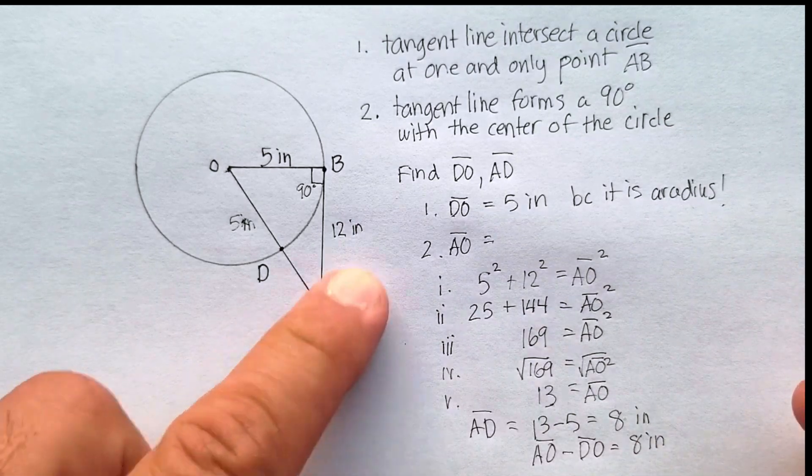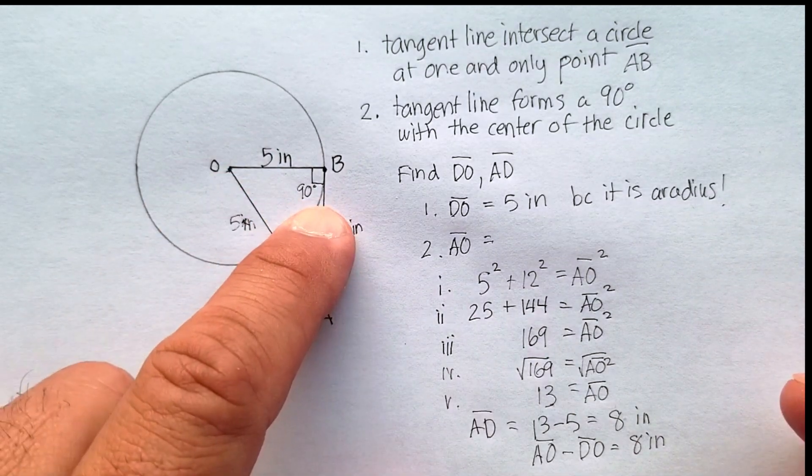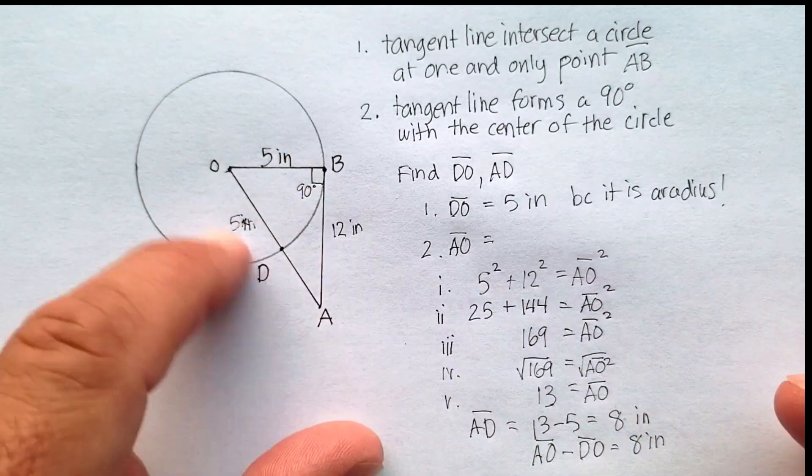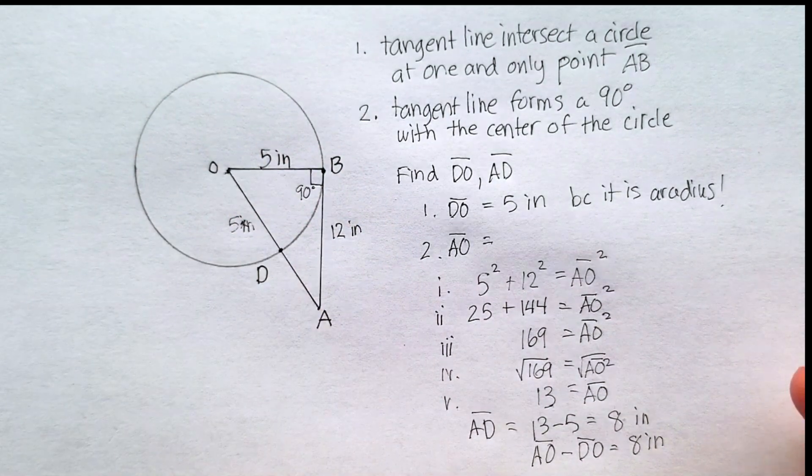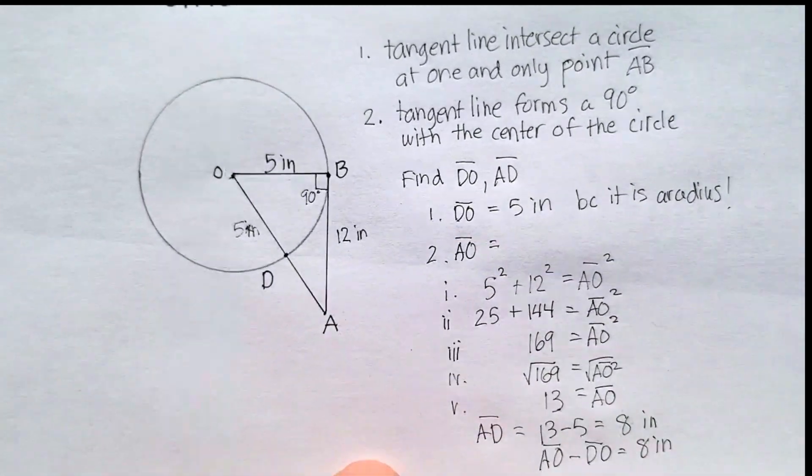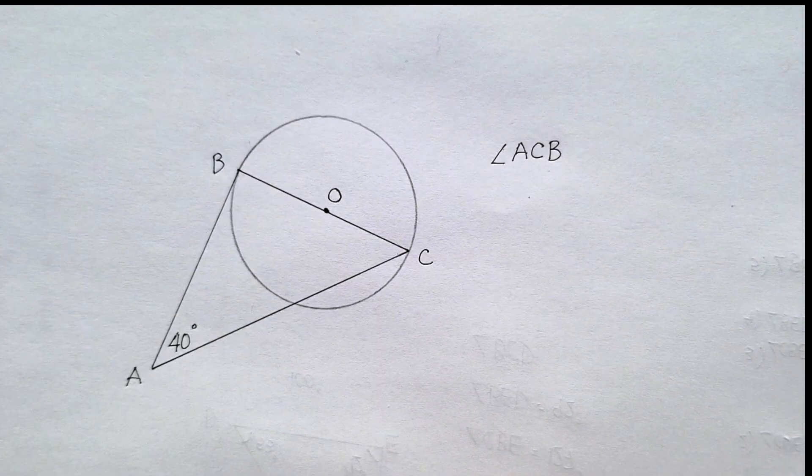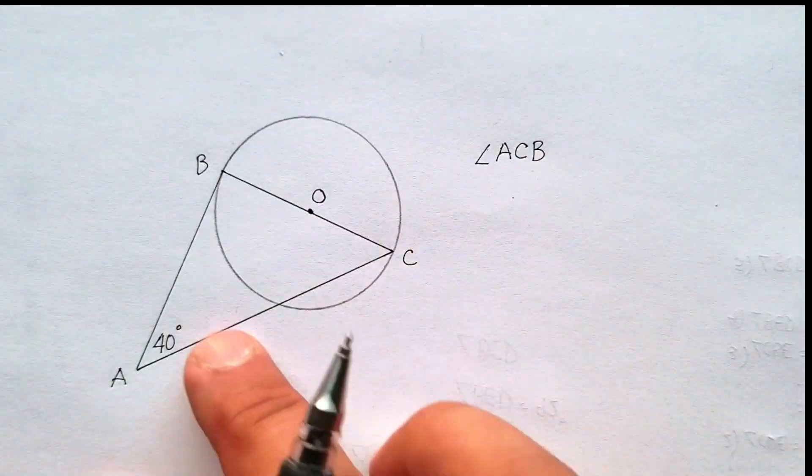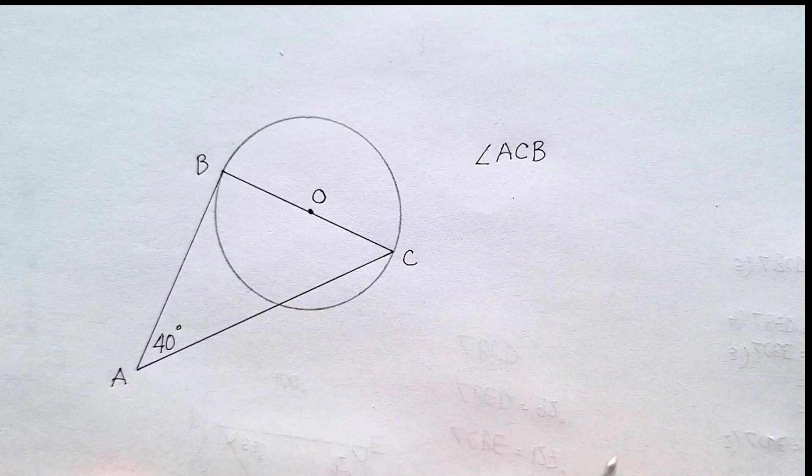Okay? So notice how we were able to use the tangent line and the information there to find the right triangle, and then use the Pythagorean theorem. Okay? Let me show you another example of what we could do here. So here's another example of what we could do. We could actually find the internal angles of a circle if we have enough information.